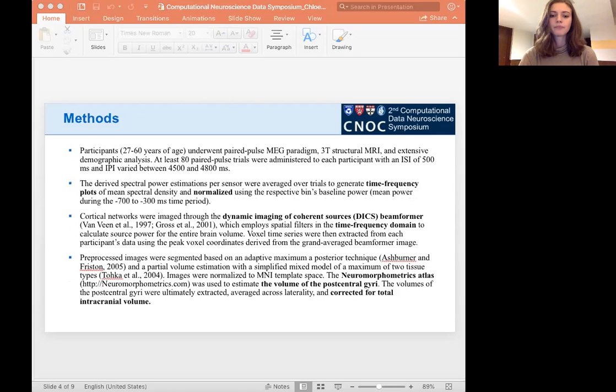For this study, we recruited 109 participants between the ages of 27 and 60 to undergo the paired pulse MEG paradigm, 3T structural MRI, and extensive demographics. At least 80 paired pulse trials were administered to each participant with an ISI of 500 milliseconds and an IPI which varied between 4500 and 4800 milliseconds.